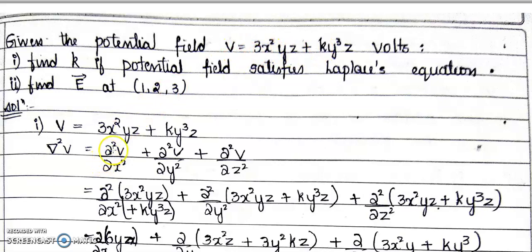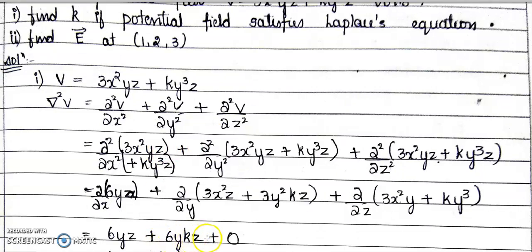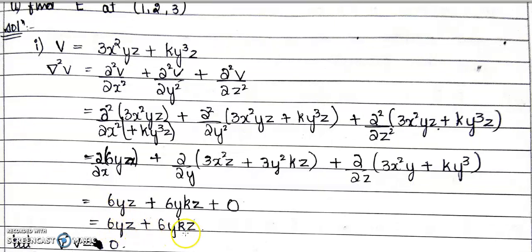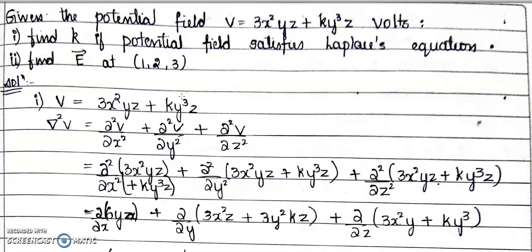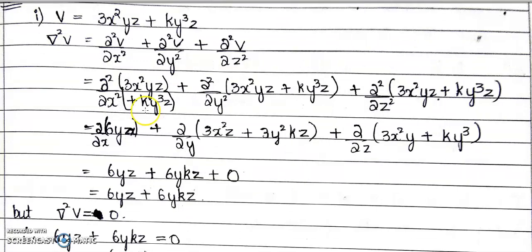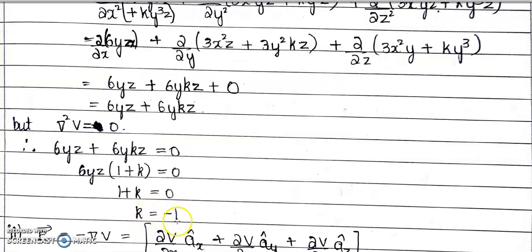Substituting V = 3x²yz + ky³z and differentiating: ∂²V/∂x² = 6yz, ∂²V/∂y² = 6kyz, and ∂²V/∂z² = 0. Setting del²V = 6yz + 6kyz = 0, we get k = −1. This is the value of k for which the given potential field satisfies the Laplace equation.